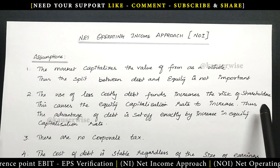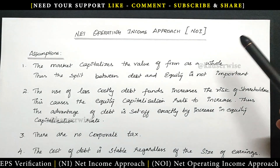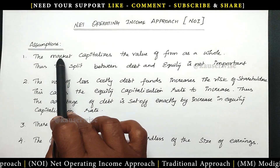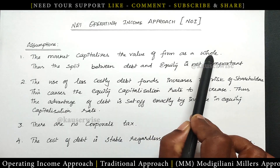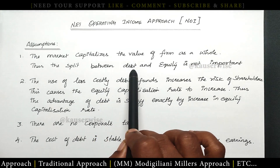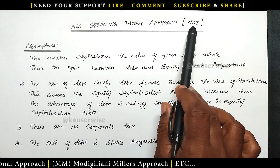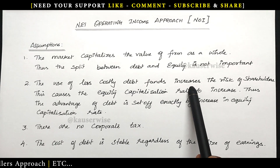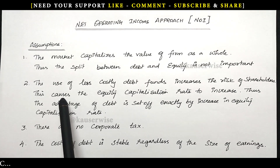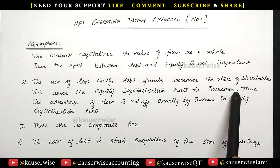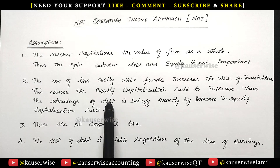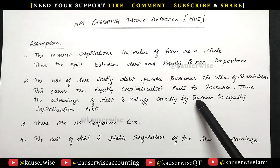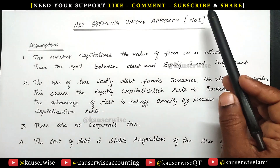Before we see the numerical problem on the net operating income approach, let us try to understand the basic assumptions and formulas. The first assumption is the market capitalizes the value of the firm as a whole — that is, the split between debt and equity is not important according to this approach. The second one is the use of less costly debt funds increases the risk of shareholders, so this causes the equity capitalization rate to increase. Thus, the advantage of debt is set off exactly by an increasing equity capitalization rate.